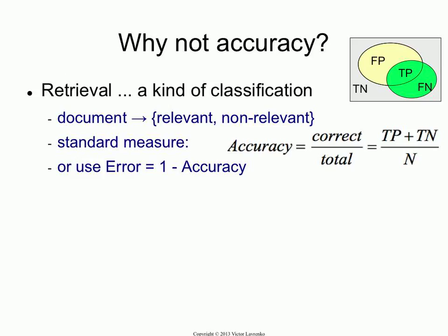All right, let's start. So last time we left off, we were talking about evaluation metrics and how do you decide if your system is any good. Where we left off is we were talking about accuracy, and I hope that I have convinced you that accuracy is a horrible metric for evaluating retrieval systems, and you should never use it.